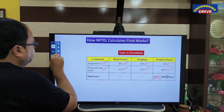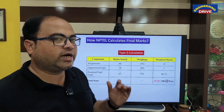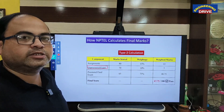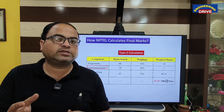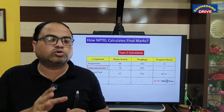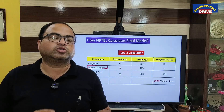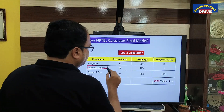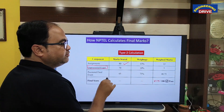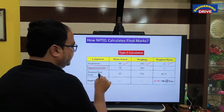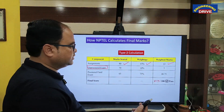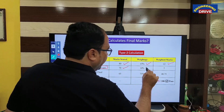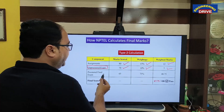Now for the Type 2 calculation method. As mentioned, Type 2 includes an unproctored exam, which most programming subjects have. You can verify before applying whether a subject has an unproctored exam. In this example, a student got 80 marks for the assignment with 15% weightage: 80 multiplied by 0.15 equals 12 marks. For the unproctored online exam — conducted at any convenient location with internet and a computer — the student got 70 marks; 10% of 70 is 7 marks.